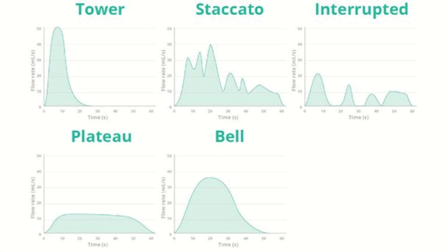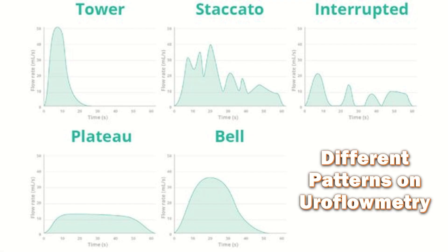The different patterns on uroflowmetry include the tower pattern, staccato, interrupted, plateau, and bell-shaped.